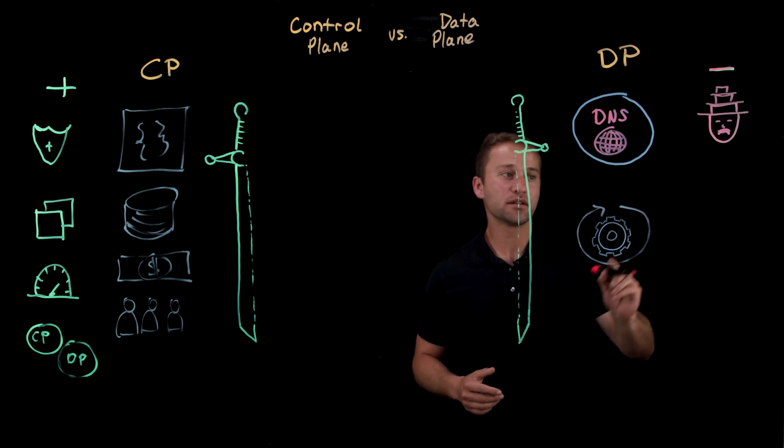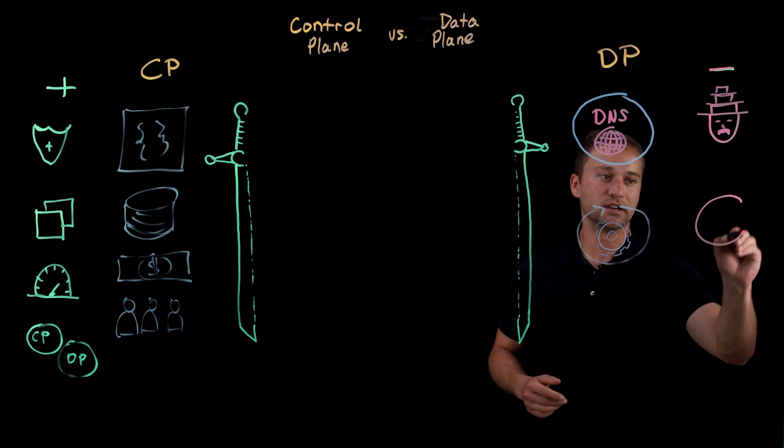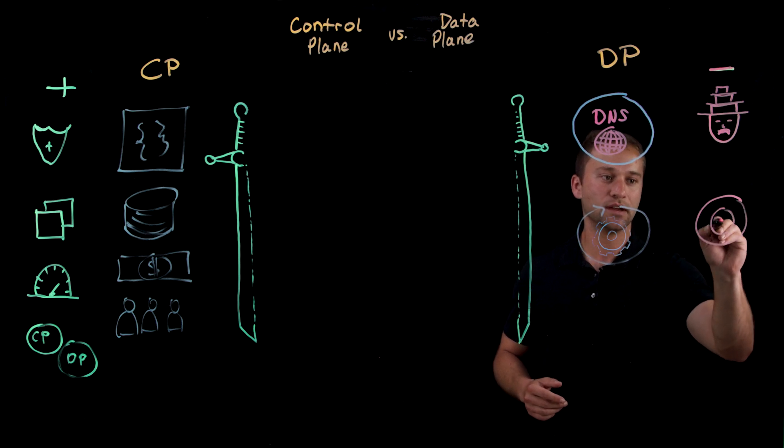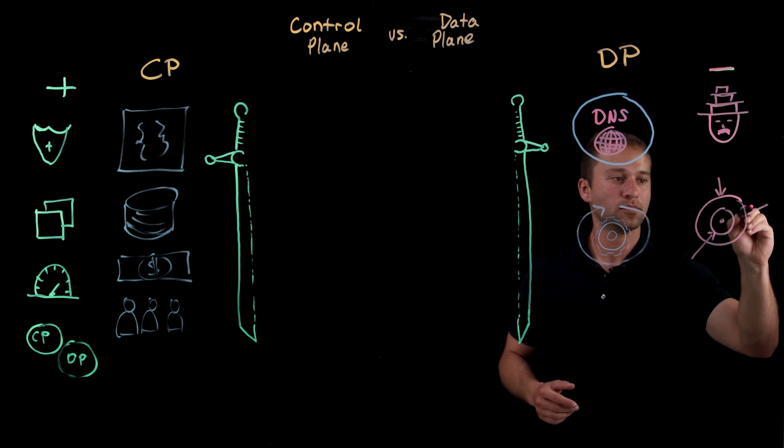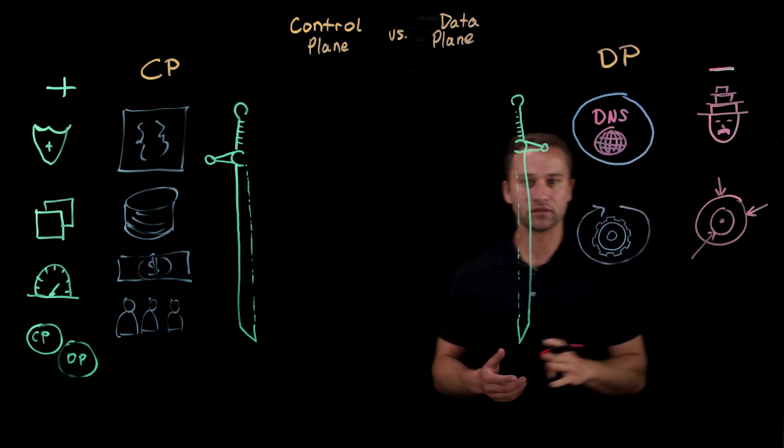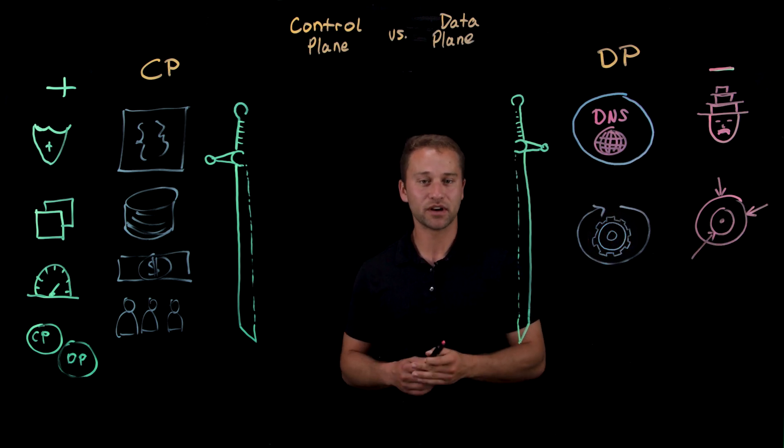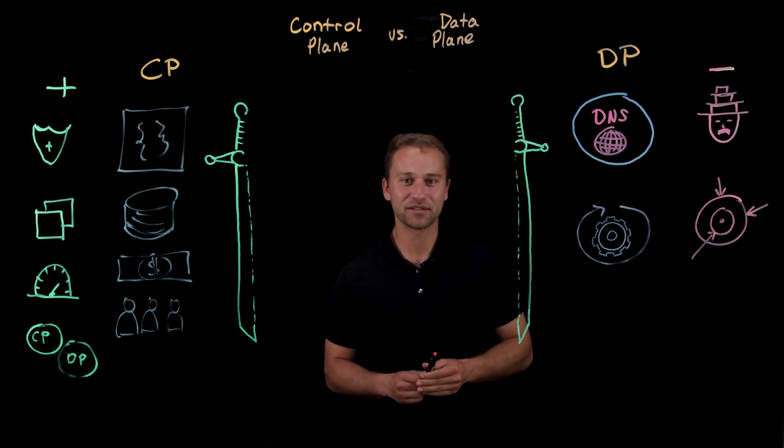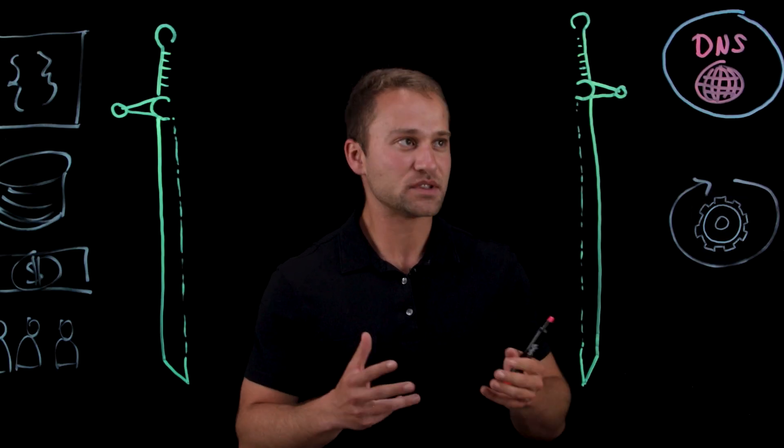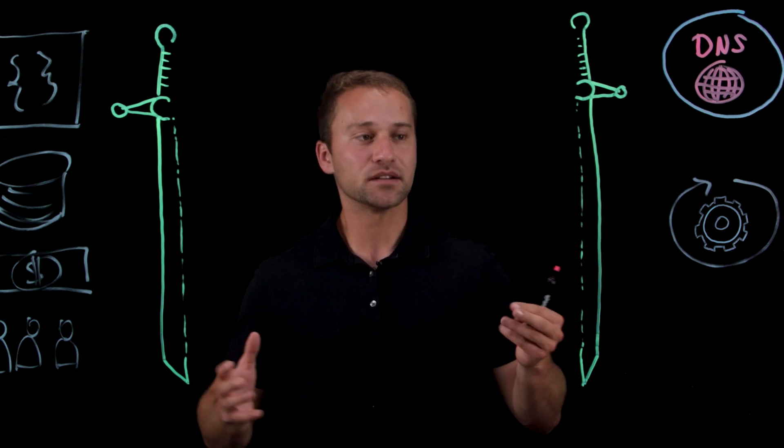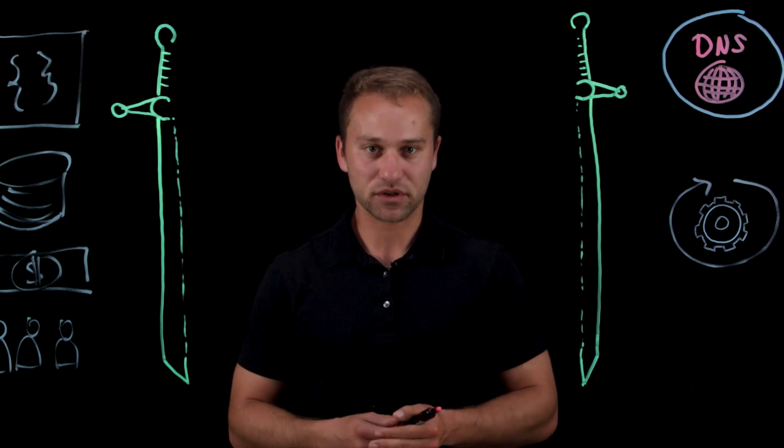And another thing to consider is your increase to the attack vector or your attack surface. More infrastructure, more types of infrastructure give your adversaries, the people that want to take down your platform, the ability to exploit different types of problems that are inherent to each of your two infrastructural planes.